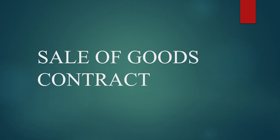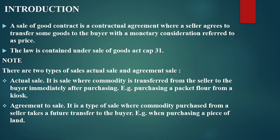Welcome to our topic: sale of goods contract. Introduction — a sale of goods contract is a contractual agreement where a seller agrees to transfer goods to the buyer with a monetary consideration referred to as the price. The rules are contained in the Sale of Goods Act, Cap 1.